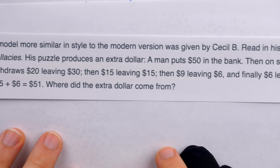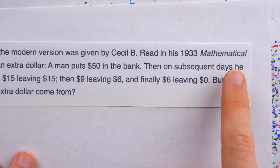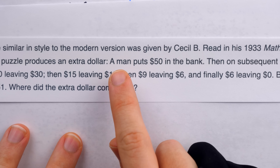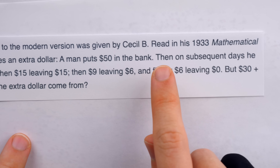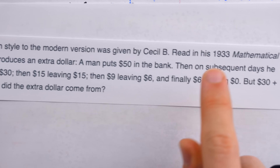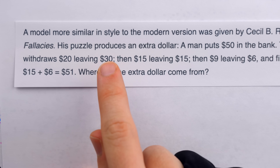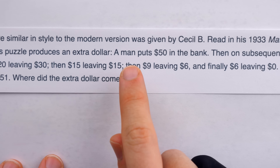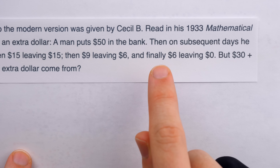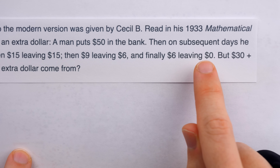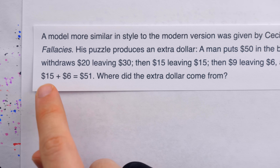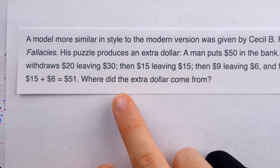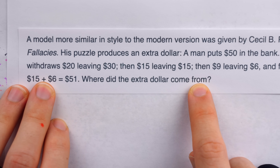Then the version from the alleged writer Cecil B. Reed's book, Mathematical Fallacies, goes like this. A man puts $50 in the bank. Then on subsequent days, he withdraws $20, leaving $30. Then $15, leaving $15. Then $9, leaving $6. And finally $6, leaving $0. But $30 plus $15 plus $6 is $51. So where did the extra dollar come from?